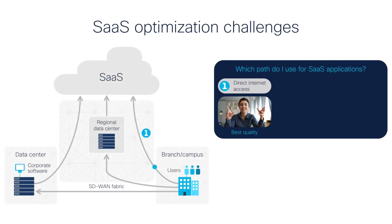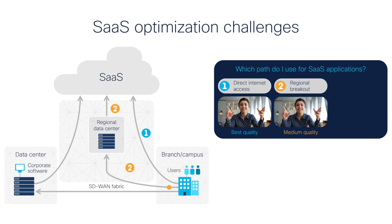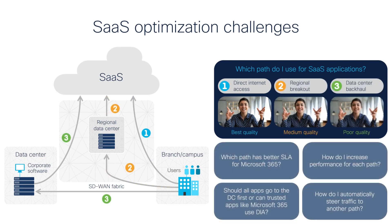The legacy WAN architecture that takes traffic from branches to data centers, then to the internet, poses major problems in this new cloud paradigm — such as inefficiency, high cost due to expensive links, and performance degradation caused by latency, which all take their toll on the user experience. In this scenario, how do we optimize connectivity?